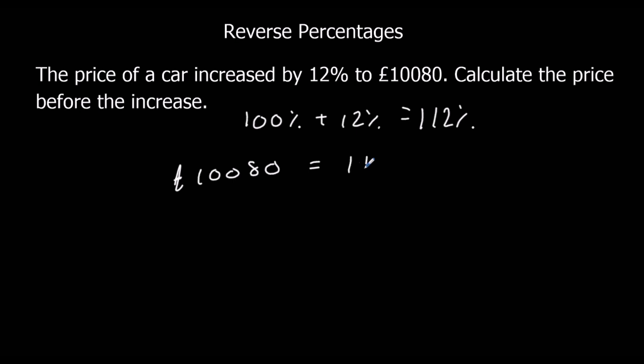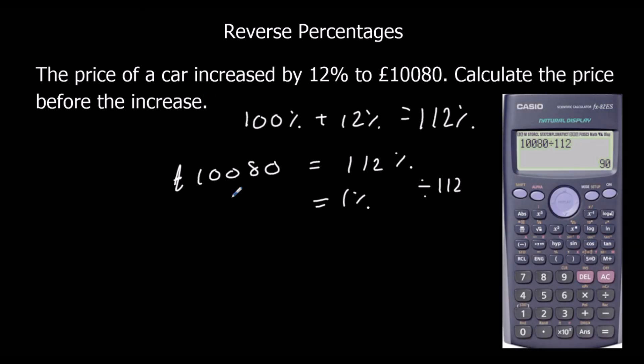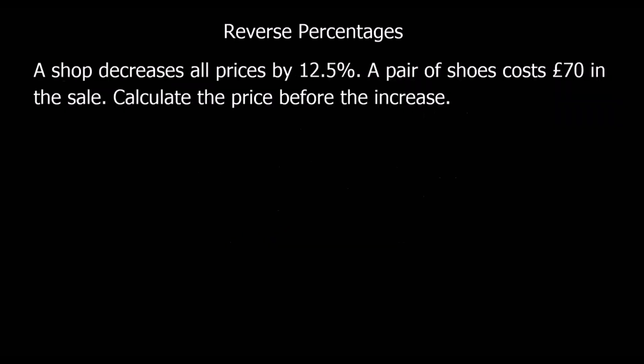You find 1% by dividing by 112. I take this number in the calculator, divide it by 112, and that gives me £90. Then if I want to find 100%, times by 100. So 90 times 100 is £9,000. So that's the answer.